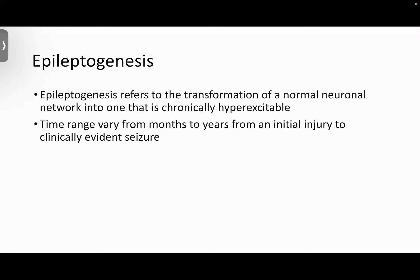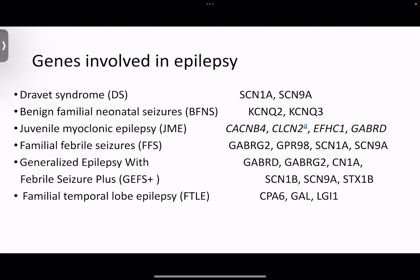Epileptogenesis refers to the transformation of a normal neural network into one that is chronically hyperexcitable. The time from an initial injury to a clinically evident seizure can vary from months to years. Most genetic epilepsies involve channelopathies — for example, Dravet syndrome is associated with a sodium channelopathy (SCN1A), benign familial neonatal seizures with a potassium channelopathy, and most seizure syndromes have associated gene variants.